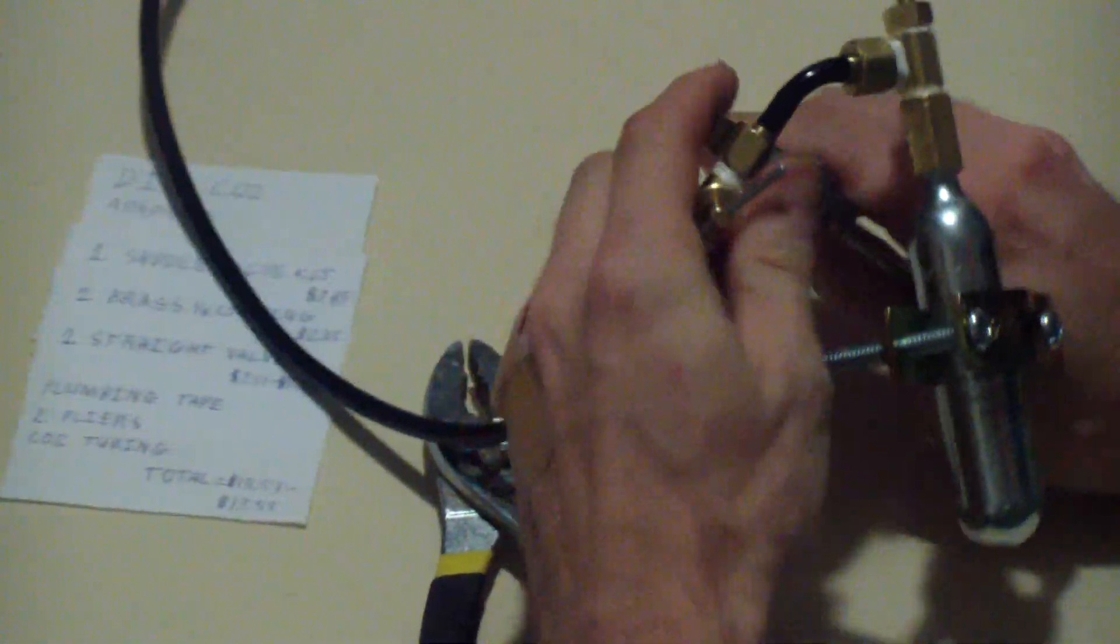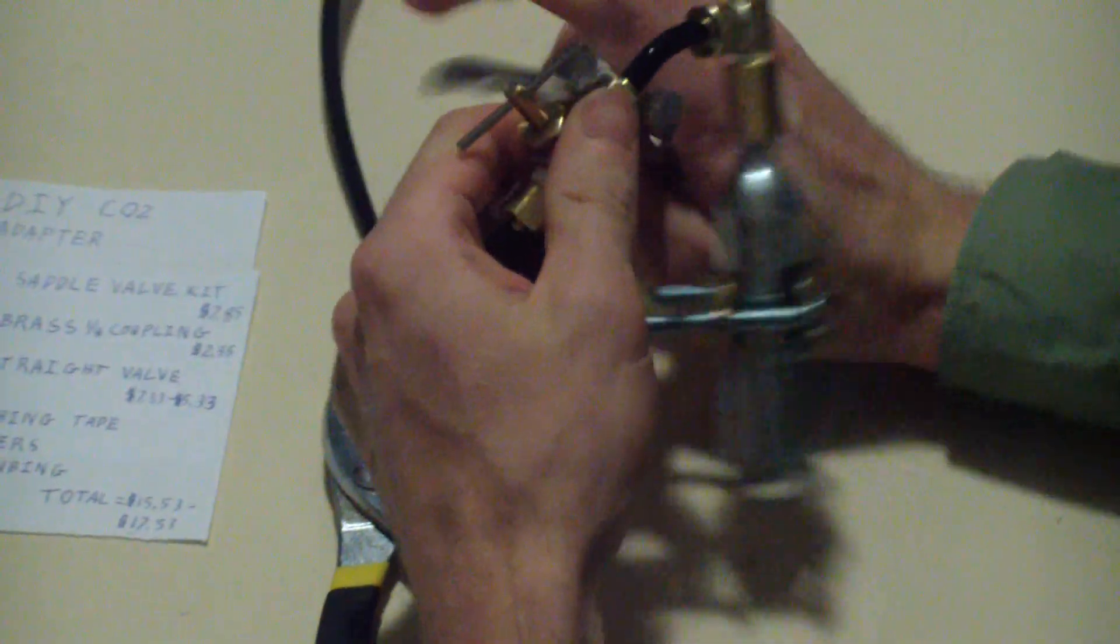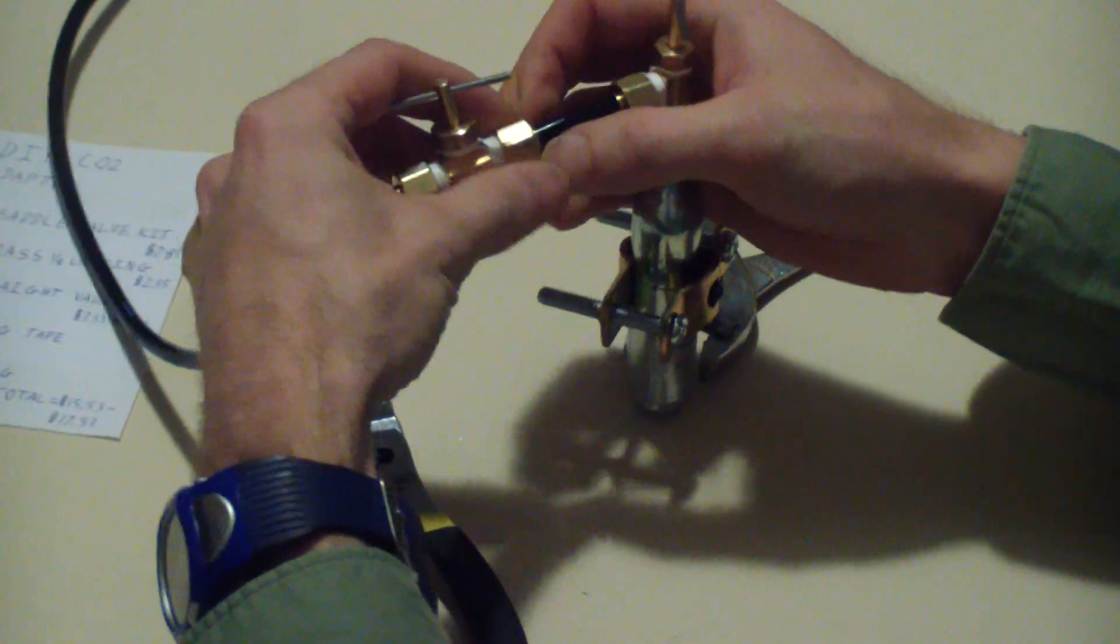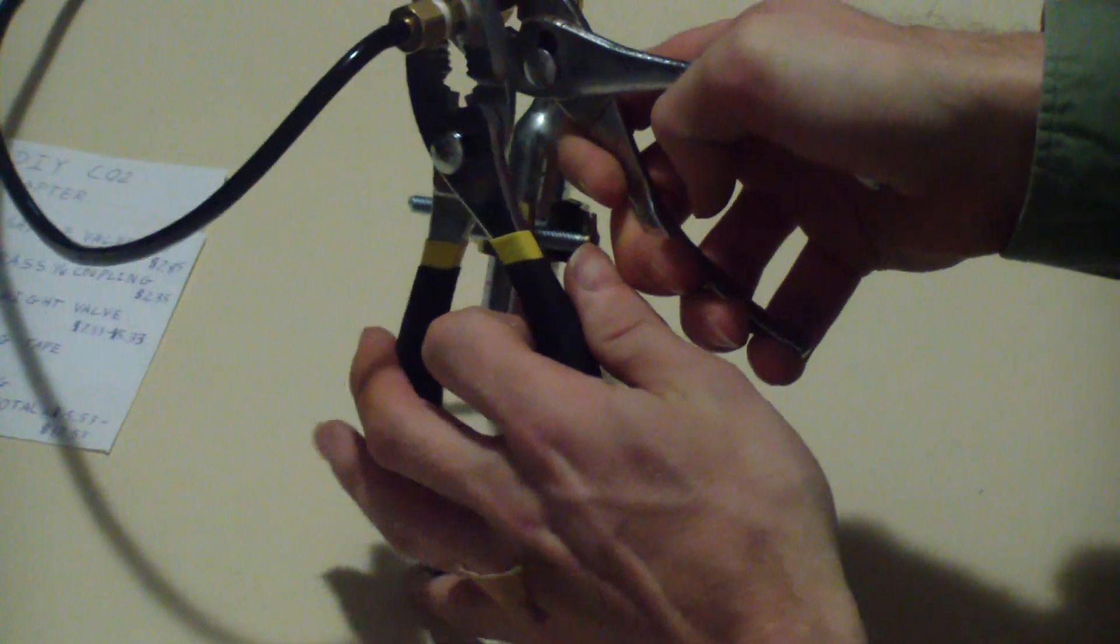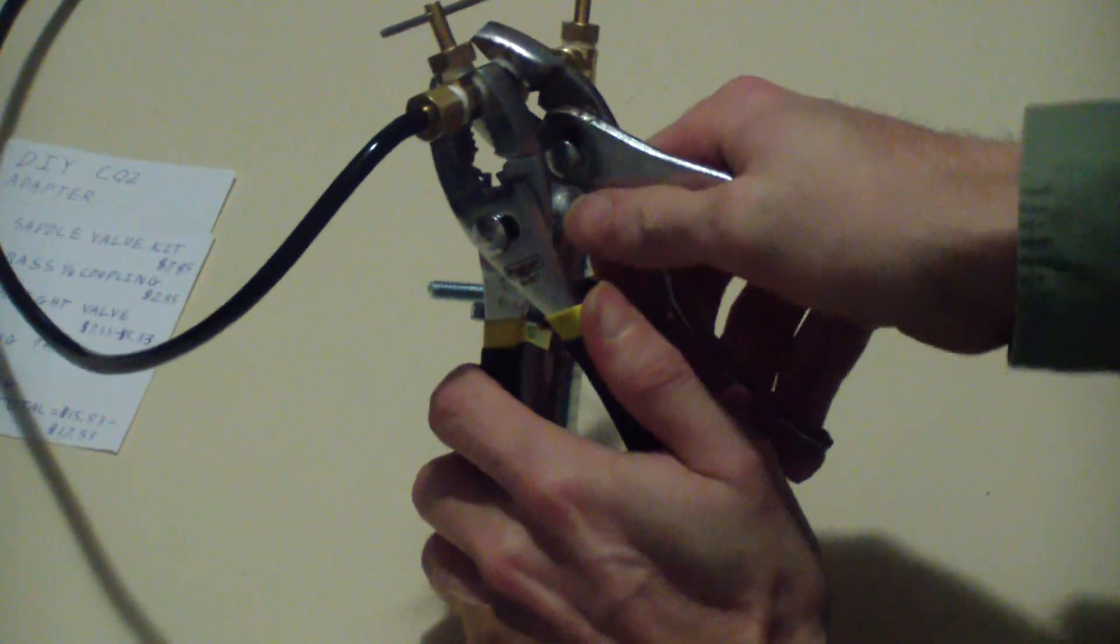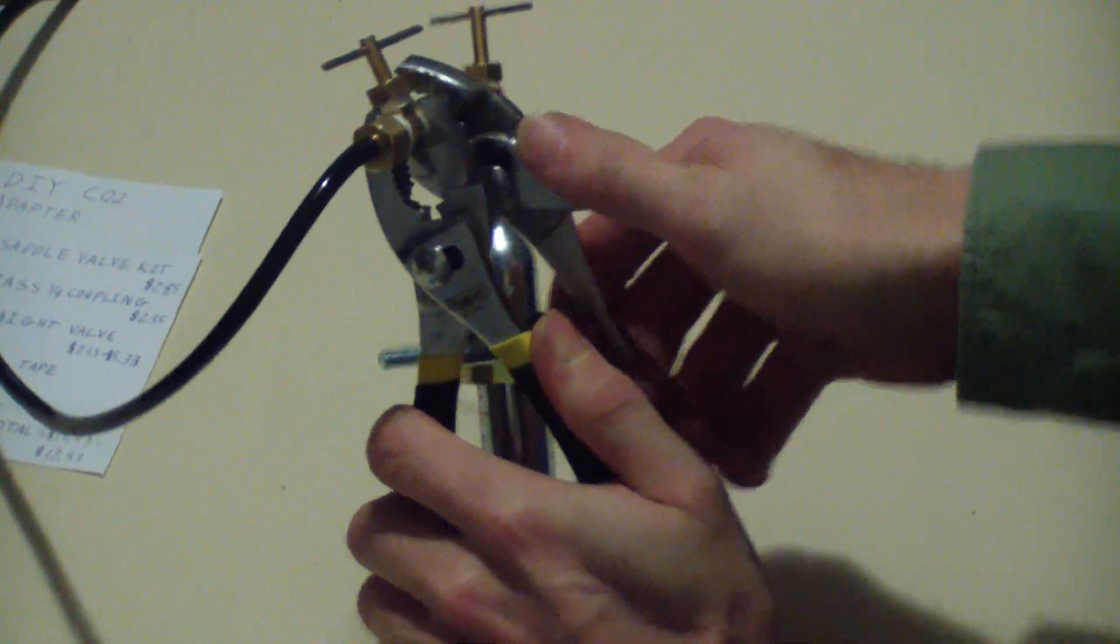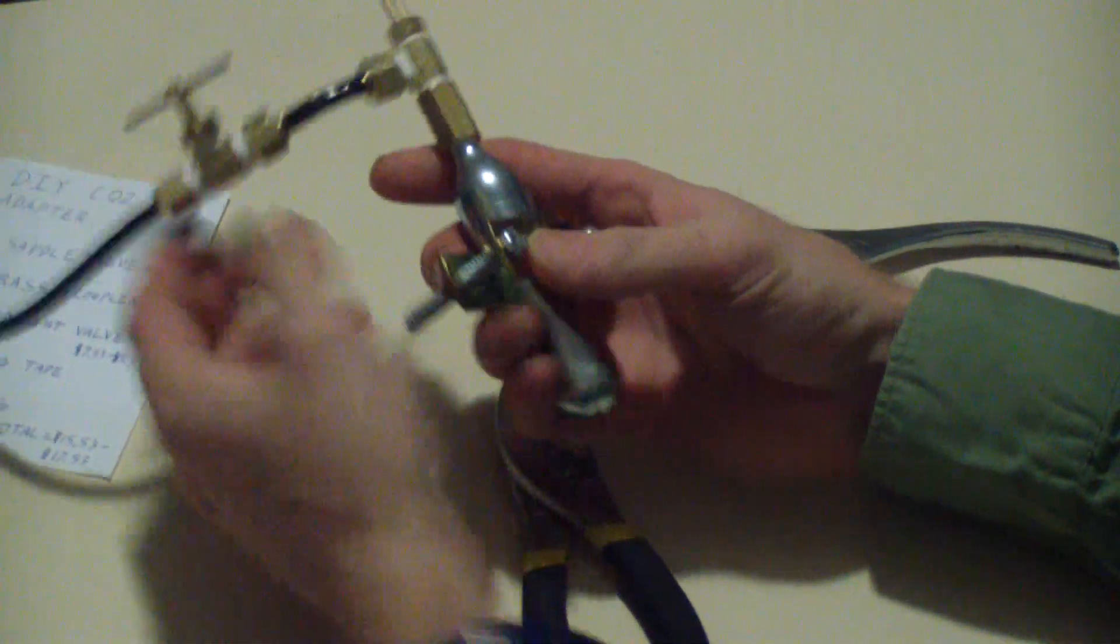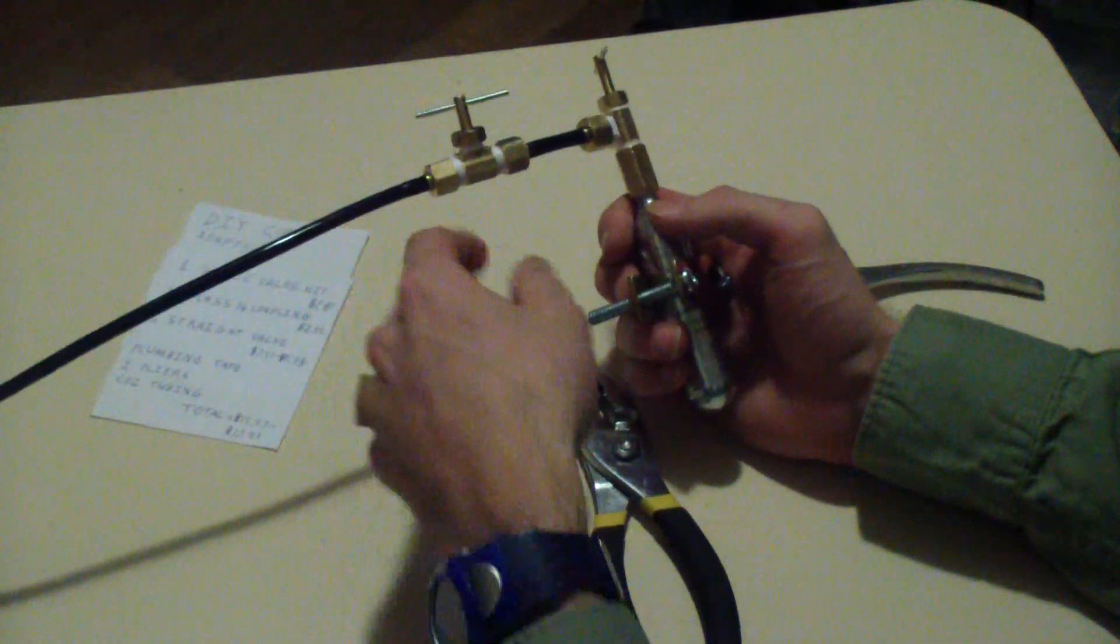You can loosen this one back off, and then you're going to align those. Holding your shutoff valve in place and turning just the nut. It may not be the prettiest, but it will definitely work. Turn your CO tubing off into your tank.